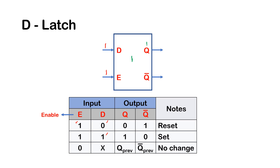What happens if E is zero? If that is the case, it doesn't matter what D is — Q would maintain its present state. Let's assume the present state is one; there will be no change. X here stands for 'don't care', meaning it doesn't matter whether D is a one or a zero. As long as E is zero, nothing will happen; Q will maintain its present state.